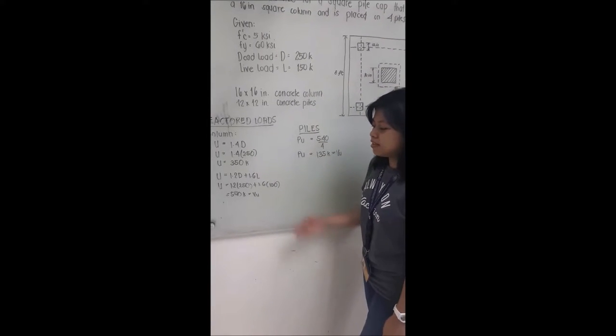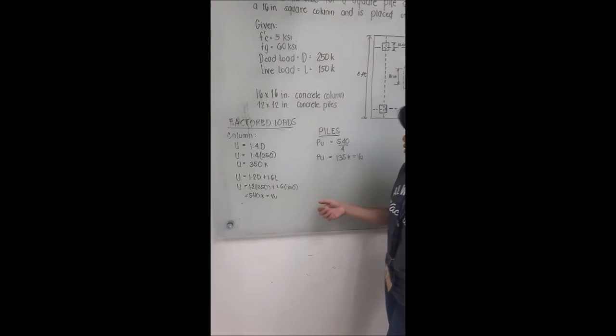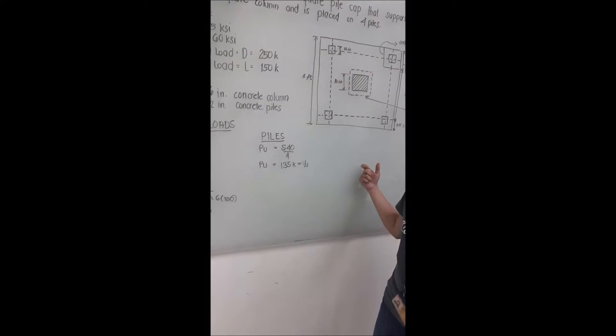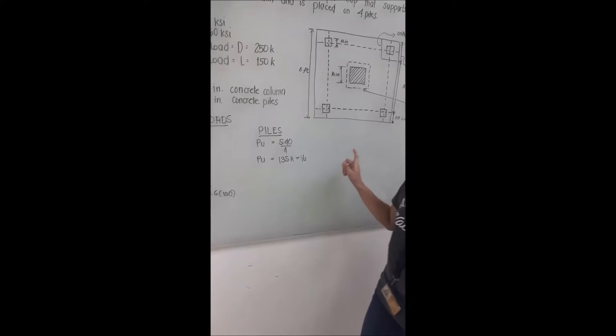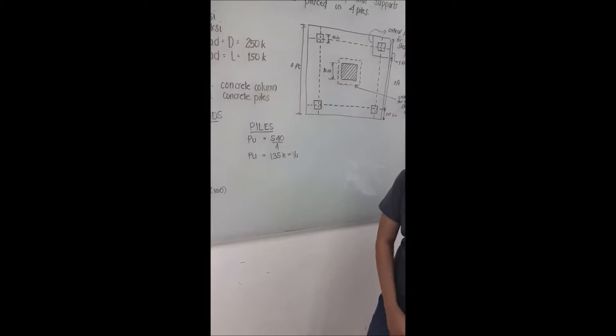From there, we found out that the NSCP 2001 is more conservative and we used that to get the load of each pile. So we divided it by 4 and we got the load per pile.